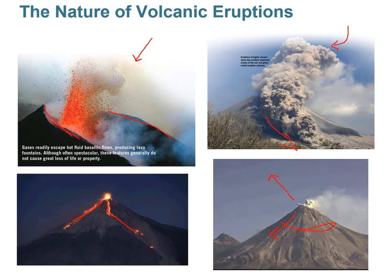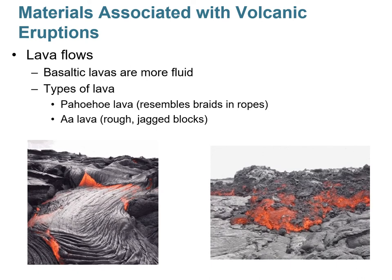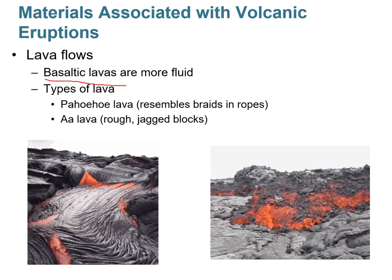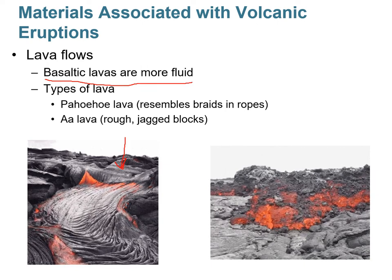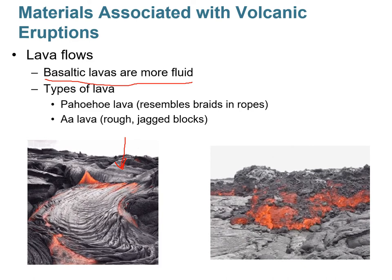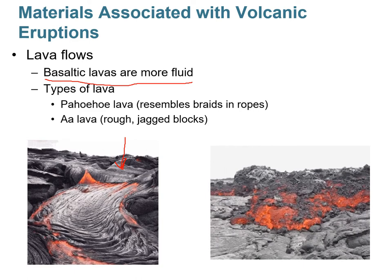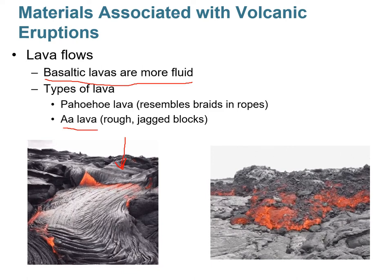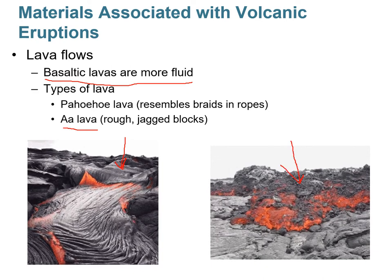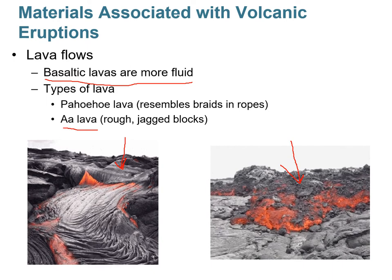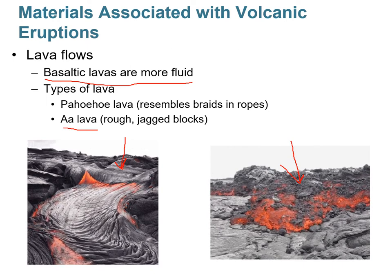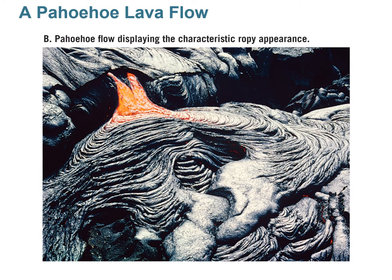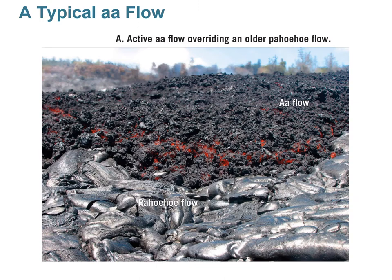Basaltic lavas are very fluid and move pretty quickly. There are two types of lava flows. Pahoehoe resembles braids or ropes — you can see that ropey texture forming as lava cools down and crystallizes. Then there's aa — a Hawaiian term meaning rough and jagged blocks. This flow is a little slower moving, almost like hot coals in a grill creeping down a landscape. Here's an aa flow on top of a pahoehoe flow.